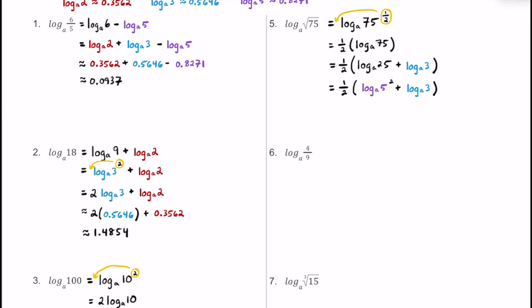Using the power rule, we take the 2 and put it in front of that log, giving us 1 half times 2 times log base a of 5 plus log base a of 3. Substituting the decimal approximations, we're going to get about 1.1094.